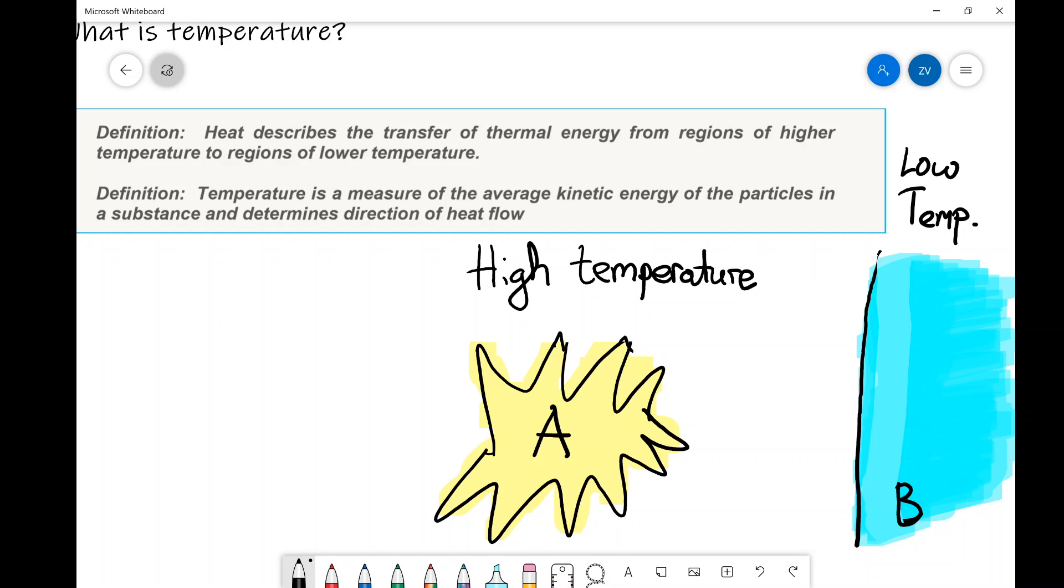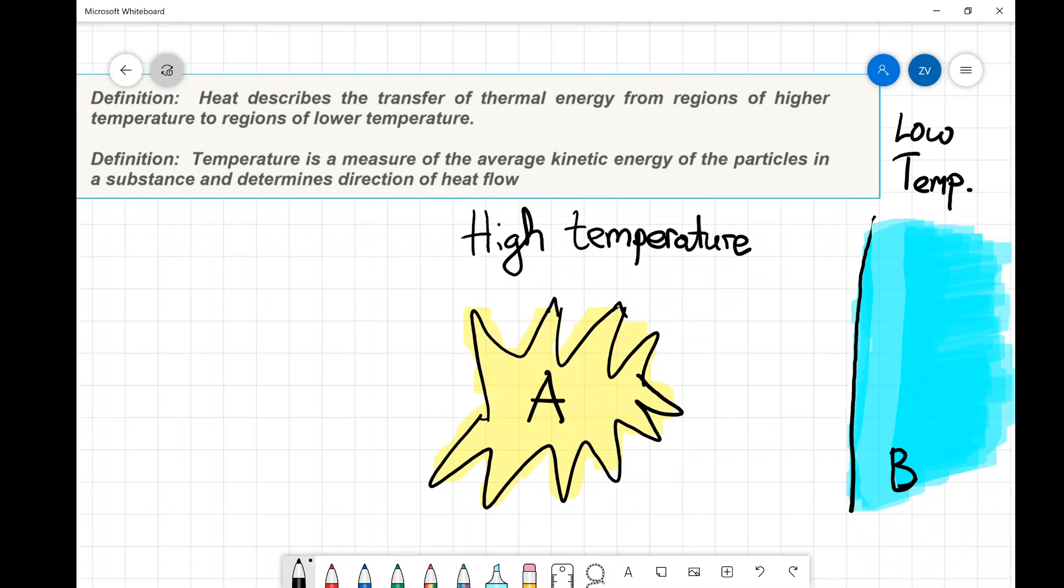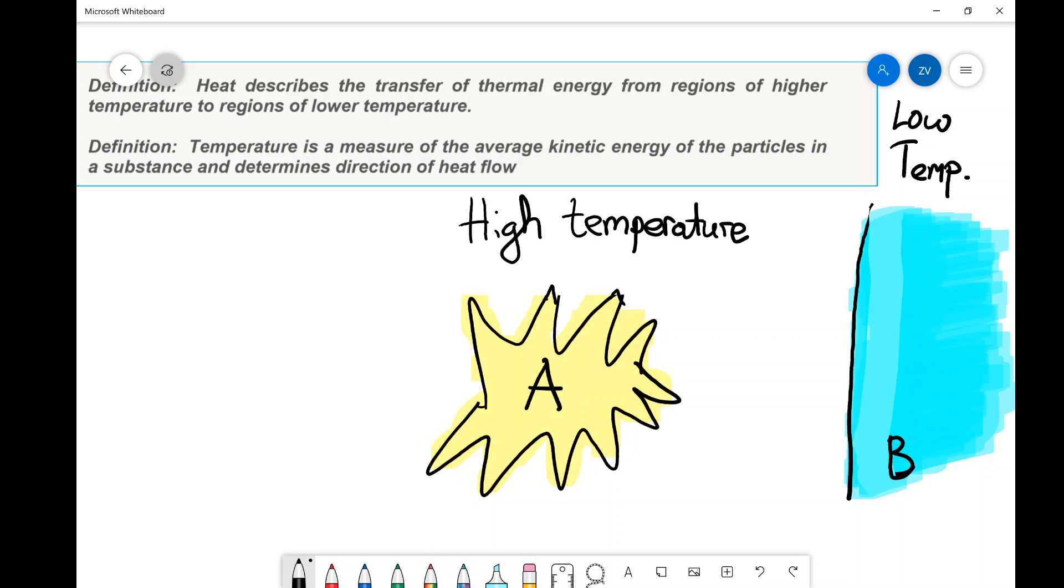For example, imagine that you have something like a campfire over here, let's say object A, some fire, and then there's an object B at a relatively low temperature relatively close to it. Well, as time goes by, depending on what sort of an insulator there is in between, let's say that there is air. So air doesn't have a particularly high density of molecules.